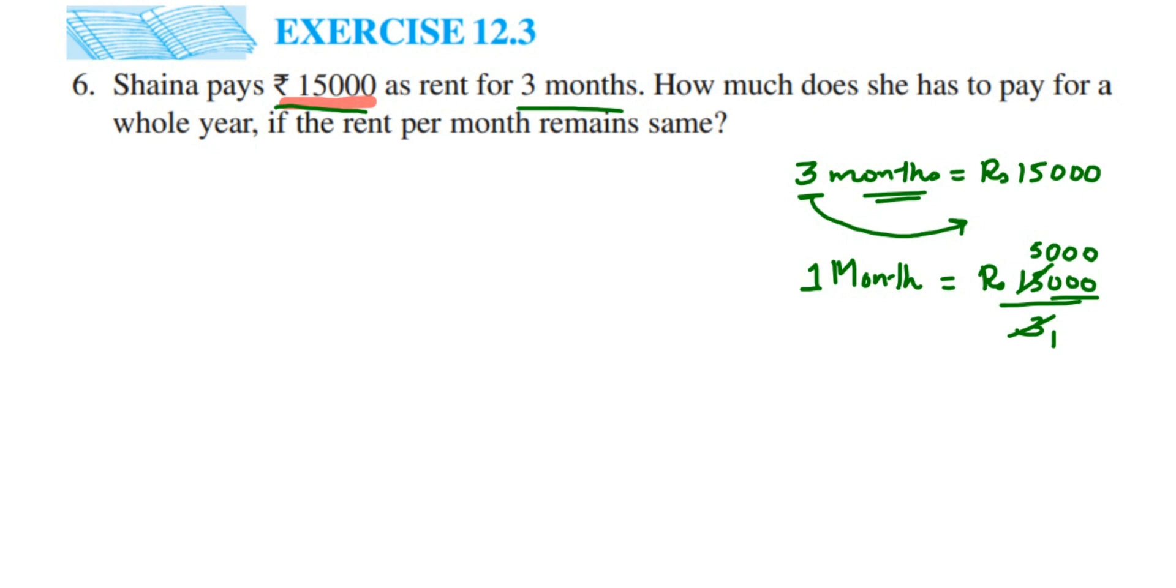I hope it's clear which number we're dividing with what. This is just to avoid confusion and you will have a clear idea. Let's rewrite what we know from the question. Given: rent paid by Shaina for three months.